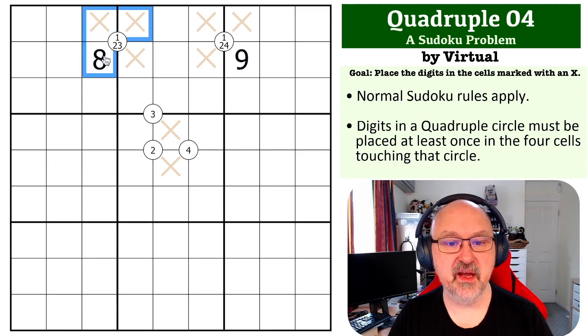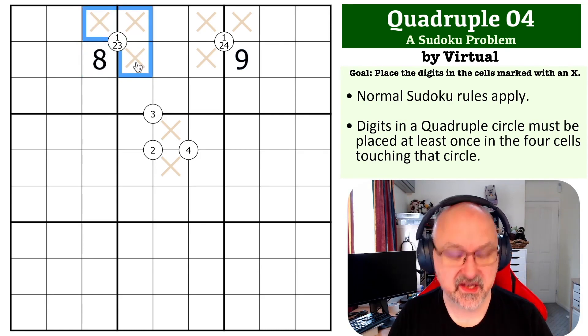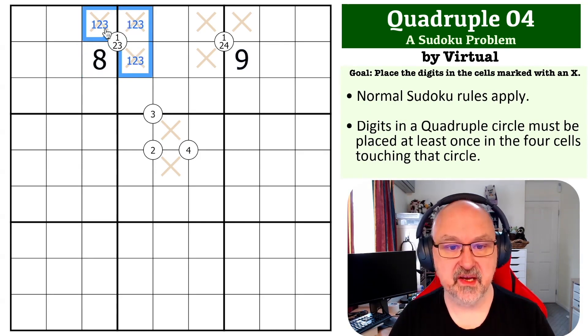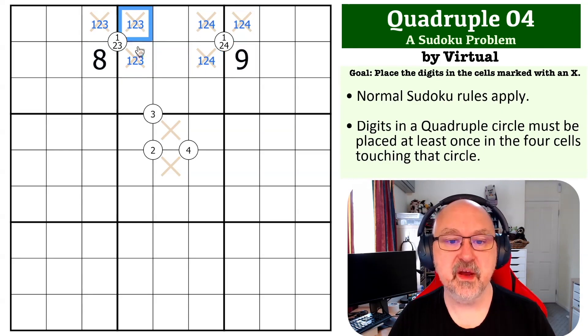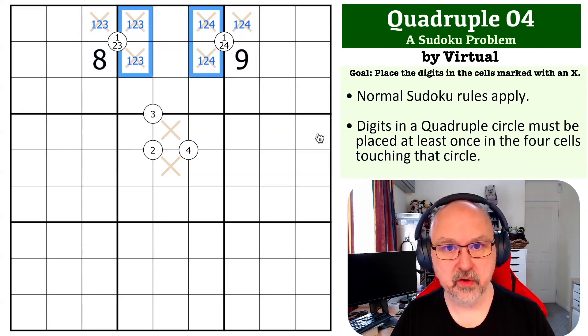We need to put one, two, and three in here and we can't put them where there's already an eight, so we put one, two, three in here. Around here we need to put one, two, and four and we can't put it there, so we put in one, two, four.